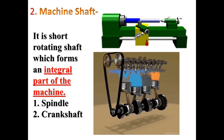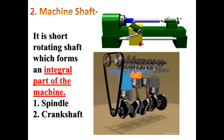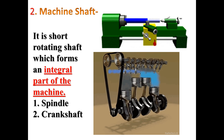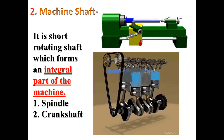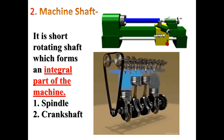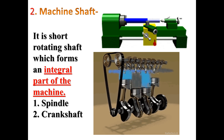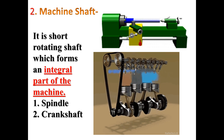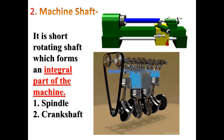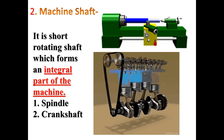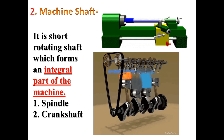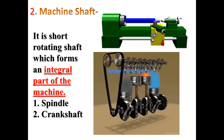The machine shaft is a shaft which is an integral part of a machine. Unlike transmission shafts, which transmit power between a source and a machine, a machine shaft is built into the machine itself. Machine shafts are further classified into spindle and crankshaft.